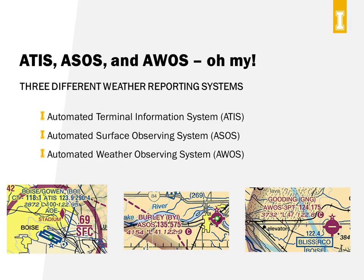There are additional frequencies listed on the sectional charts and chart supplements that you need to be aware of. These ones might actually be helpful to you if you're a drone pilot and you've got a radio. They are the frequencies that provide weather information, and there are three different weather systems. They differ by whether they're automated, whether a human is involved, what they report, and who is responsible for it.